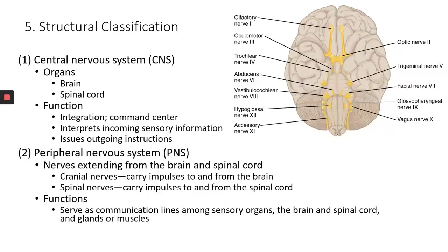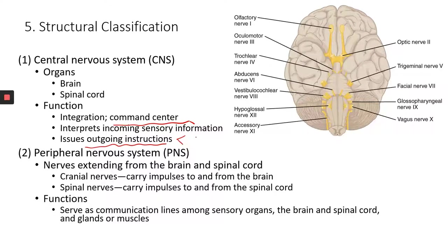Next we're going to look at some more specific structures instead of just abstract general functions. We mentioned that the CNS is the brain and spinal cord, and basically the function is the command center — integrating information, processing information, and sending out outgoing instructions through the motor division.